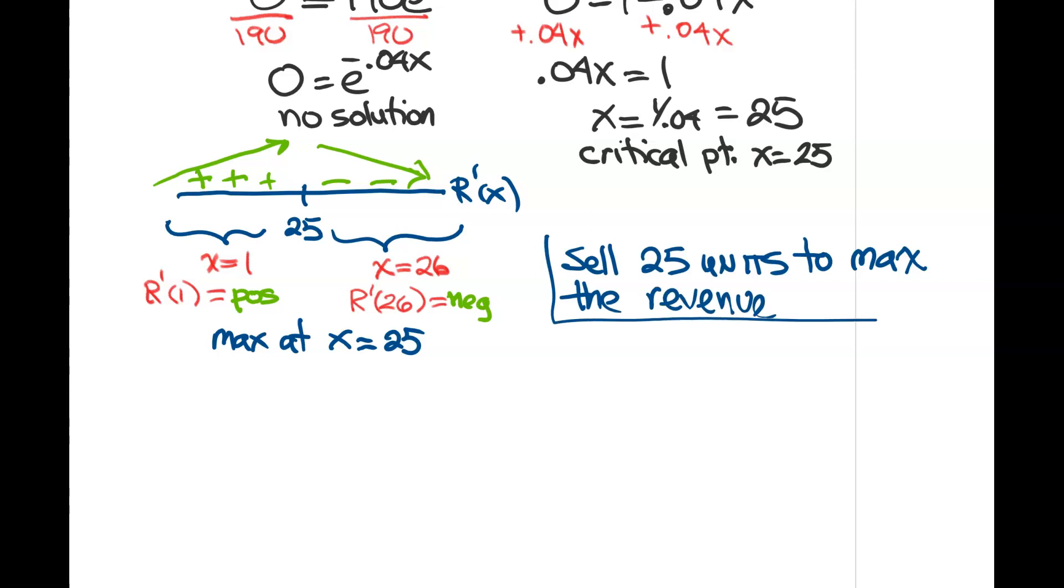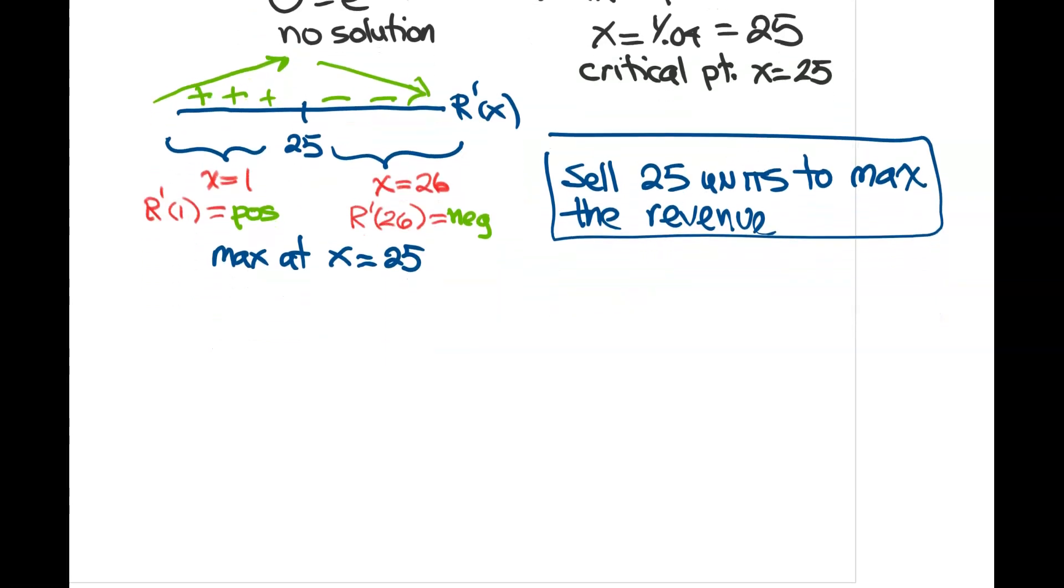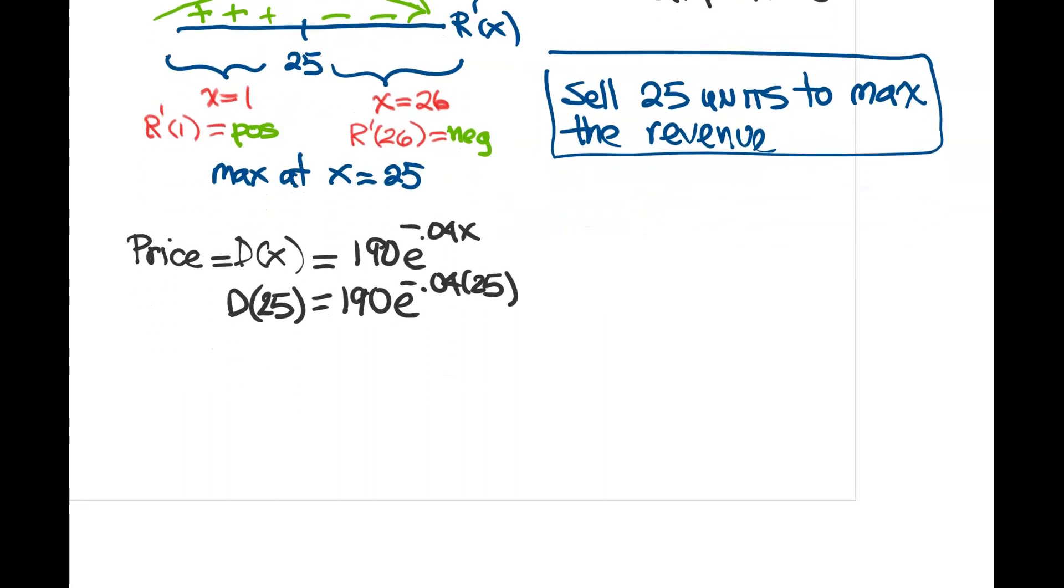And then one last question was, what price? If you want the price, you just need to plug into the price function. And the price function was D(x). So let's get the price function, which is that 190e^(-0.04x), and let's plug into that price function our 25. And then that will tell me our price when our revenue is a max. So if you plug that in, it comes out to approximately 69.897.